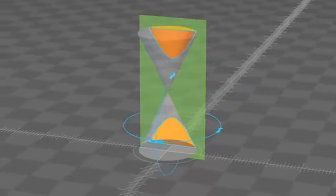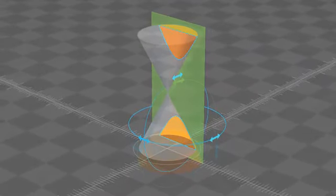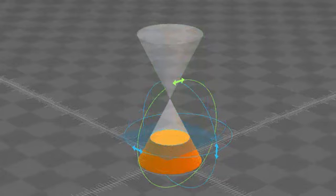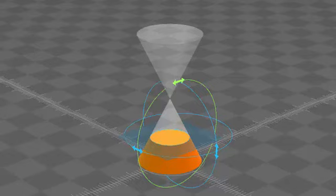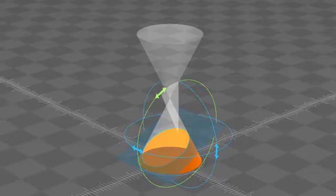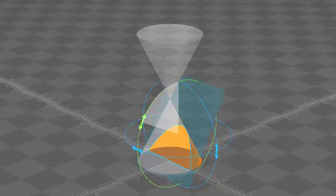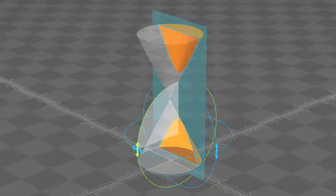So those are our conic sections. In summary, we get a circular cross section when the plane is parallel to the base of the cone. Incline that plane at a slight angle, and we generate an ellipse as the cross section. When the plane is parallel to the edge of the cone, we end up with a parabola. And when we put the plane in the vertical position, we end up with a hyperbola.